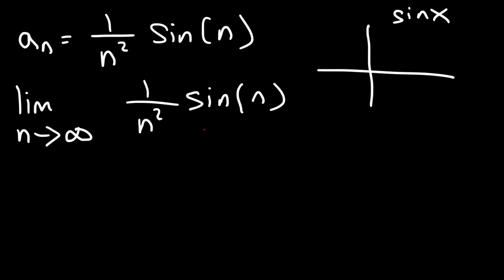This is basically a sinusoidal function that varies between 1 and negative 1. So we could say that sine n will always be between negative 1 and 1.